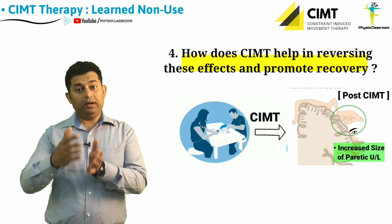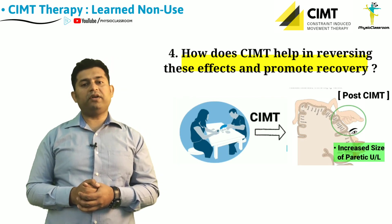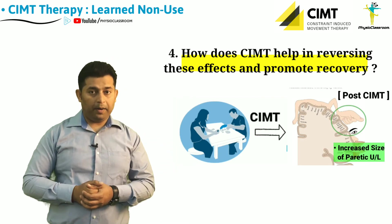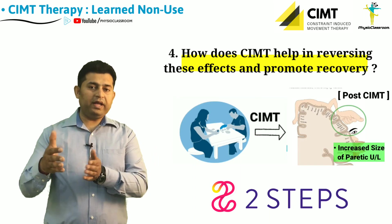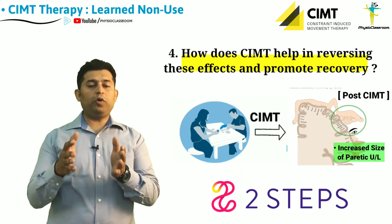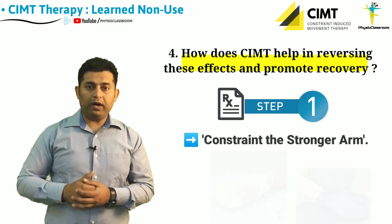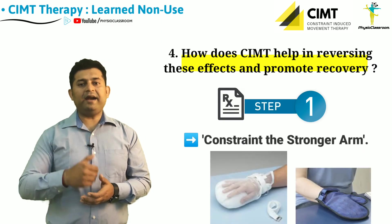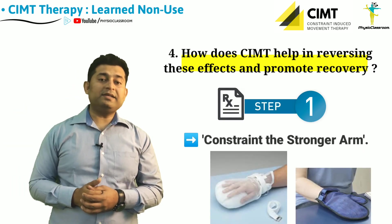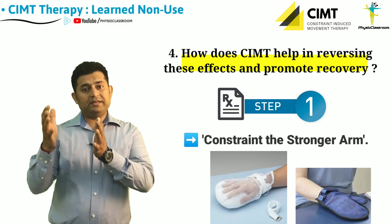CIMT training does this by incorporating two important steps. Step one: send the stronger arm on a holiday by constraining it. Once we have the stronger arm constrained, it removes all possibilities of using it automatically for day-to-day activities.